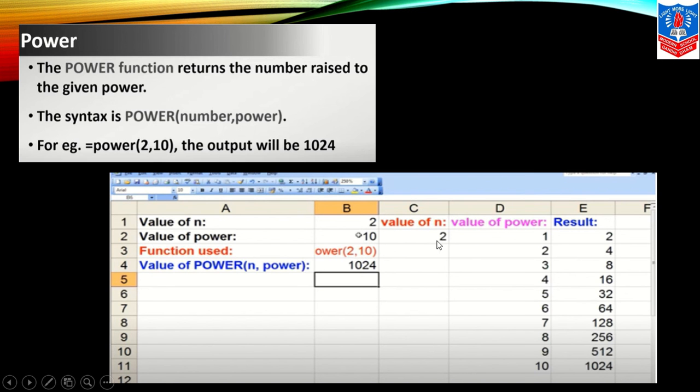Value of n, that is number 2, value of power 10 equals POWER 2, 10, output is given. Value of 2, power is 1, so 2 into 1 is 2. Value of number is 2, power is 2, output is 4. Power is 3, output is 8. Power is 4, output is 16, and so on till 10th power, output is 1024. I hope you got it.